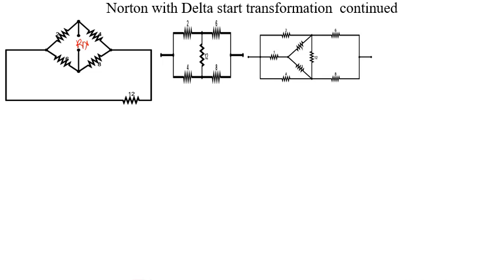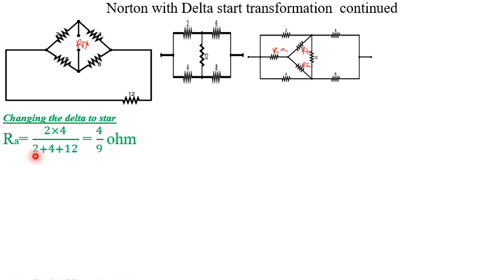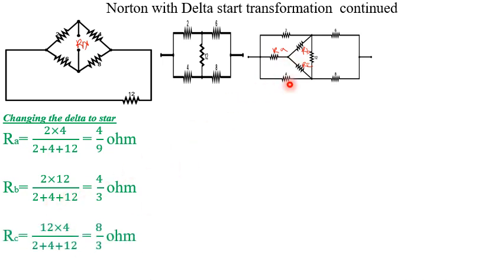Converting the delta to star, I redraw and name the star resistors as Ra, Rb, and Rc. I have already recorded a separate video explaining how to convert delta to star. To find Ra, we take the product of the opposite resistors — 2 times 4 — divided by the sum of all resistors in the delta: 2 plus 4 plus 12.